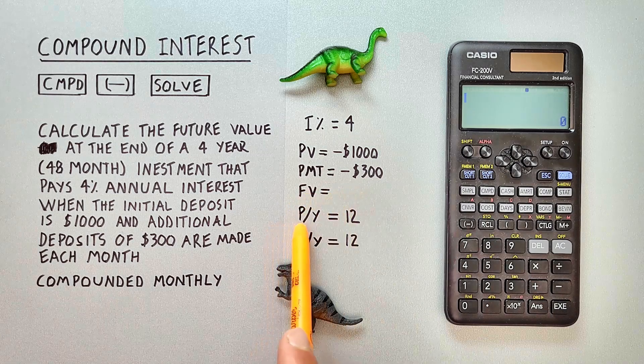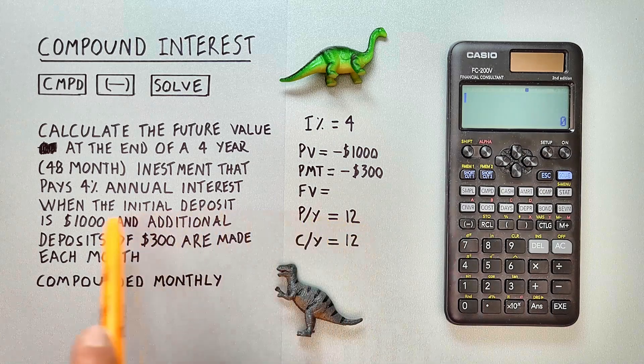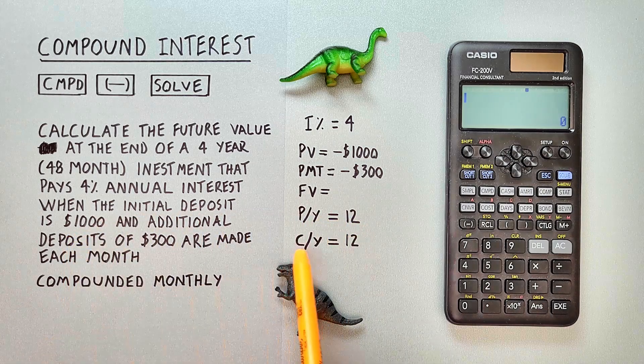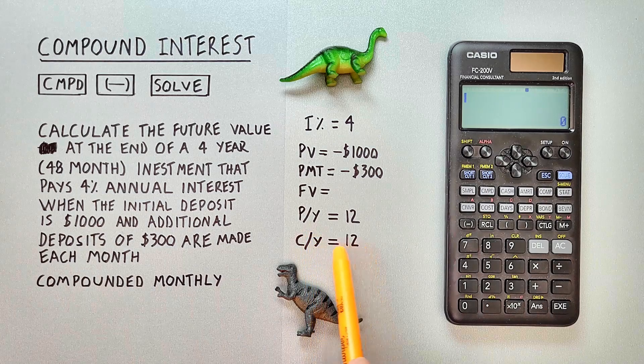Our PY or number of annual payments is 12 because we're doing one a month and our CY or number of annual compoundings is also 12.